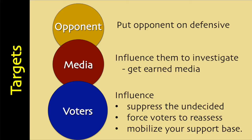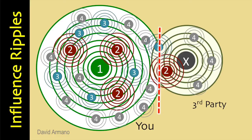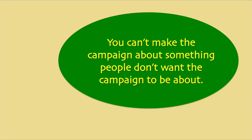Arms length or anonymous third parties can carry out the more risky aspects of your negative campaign. They can fan the flames while minimizing potential for backlash against you. Develop and use third parties such as bloggers or support organizations to carry out the bulk of the dirty work, while you use safe comparative ads that create an image of strength and respectability. But you can't make the campaign about something people don't want the campaign to be about. That is why you have to understand what the people want.